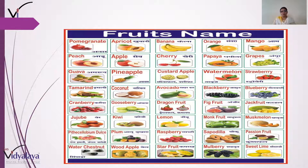So aayye dekhte hain — sabse pehle hai pomegranate, jise kehte hain anaar. Peach, yaani aaru. Guava, yaani amrud — iska pronunciation English mein dhyan se suniye: Guava, amrud.